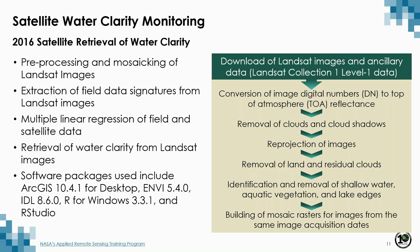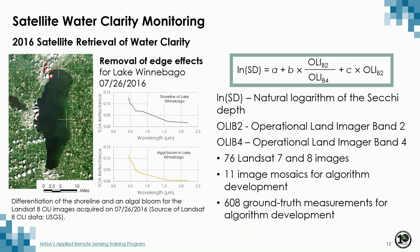In the last step, mosaic rasters are built for images acquired on the same image acquisition dates, which for Wisconsin is a mosaic of up to three images. The left of this slide shows removal of edge effects for Lake Winnebago, performed through an unsupervised classification. The spectra shown are for the shoreline of Lake Winnebago, which was removed in this step, and an algae bloom in Lake Winnebago, which was maintained. The areas marked in red in the image are the areas removed through unsupervised classification — mainly the border, areas around clouds with increased haze, and a thin red line at the shoreline representing mixed pixels of water and boat docks.